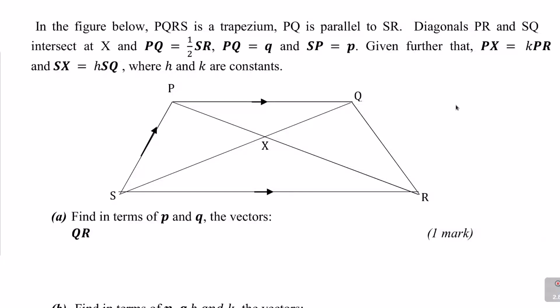Hello and welcome. Let's solve this question on vectors. In the figure below, PQRS is a trapezium. PQ is parallel to SR. Diagonals PR and SQ intersect at X, and PQ equals half of SR. PQ equals vector q, and SP equals vector p. Given further that PX equals K times PR, and SX equals H times SQ, where H and K are constants. You can see the diagram.